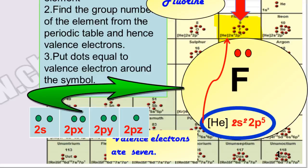There will be three pairs of electrons around fluorine and one single electron.